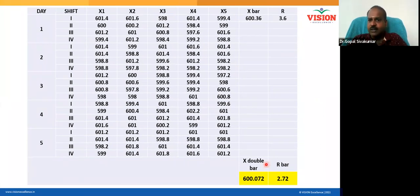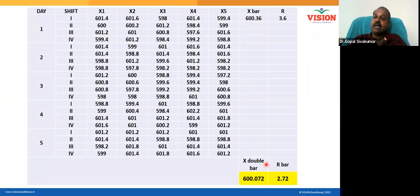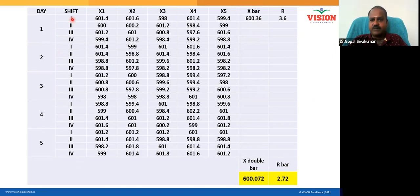Now compute the control limits. All of us know control limits are three sigma units away from the center line. But with a small amount of data, if you calculate standard deviation directly it will be a poor estimate. You can overcome this with statistical formulas. The upper and lower control limits for the range chart and the average chart use constants: D4, D3, and A2.